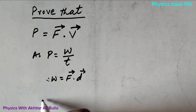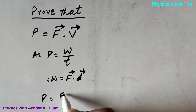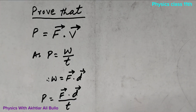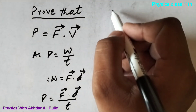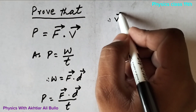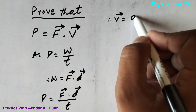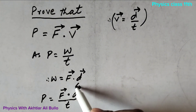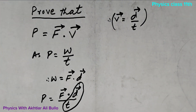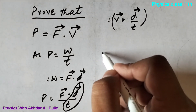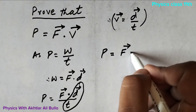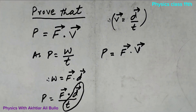So power will be equal to F dot D divided by T. Since velocity is equal to displacement per unit time, displacement upon time is equal to velocity. Therefore, power will be obtained as F dot V, meaning force dot velocity.